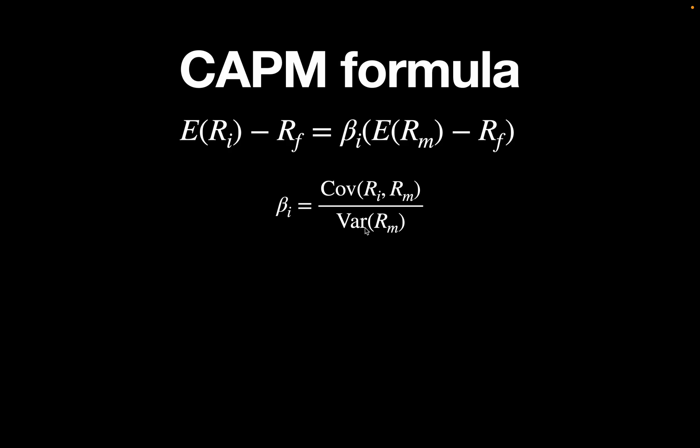So how do you interpret this beta? A beta of 1 would mean that the asset is moving in the same direction as the market and to the exact same extent as the market. A beta higher than 1 indicates that the asset is moving in the same direction as the market but also to a higher extent than the market.